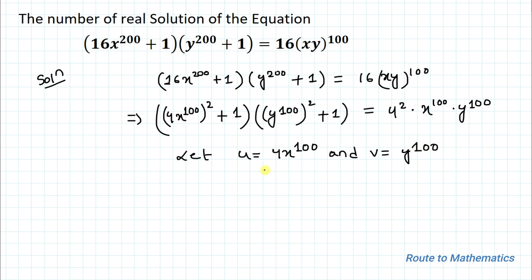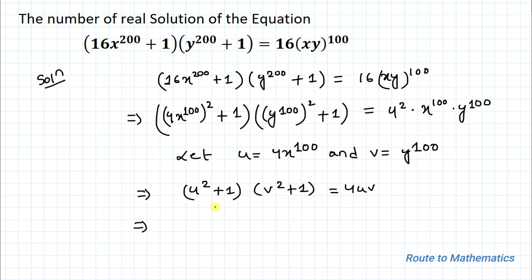Putting in the values of u and v, we have (u² + 1)(v² + 1) = 4uv. In the next step we will multiply out each term on the left-hand side.